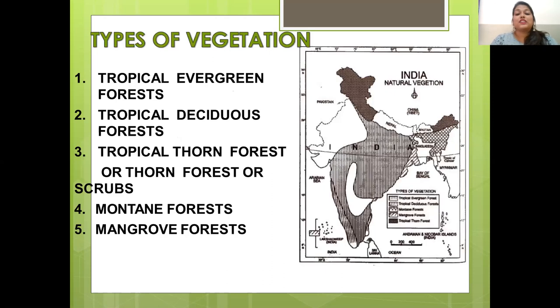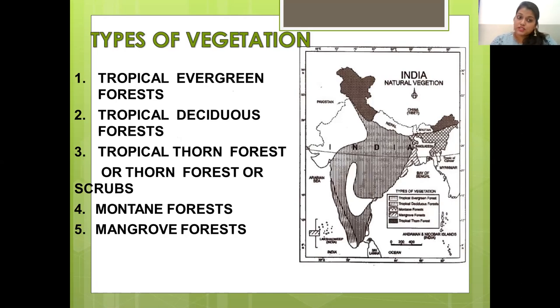The various types of vegetation we are going to cover today are: tropical evergreen forest, tropical deciduous forest, tropical thorn forest, montane forest and mangrove forest.